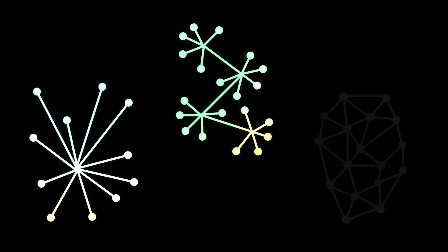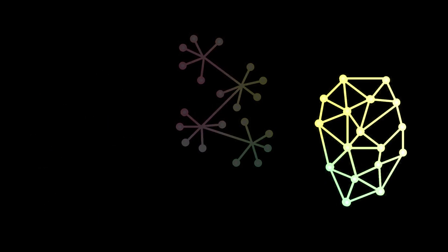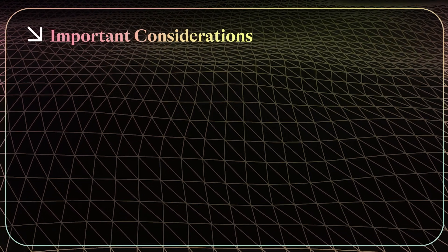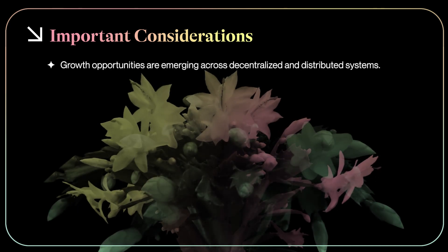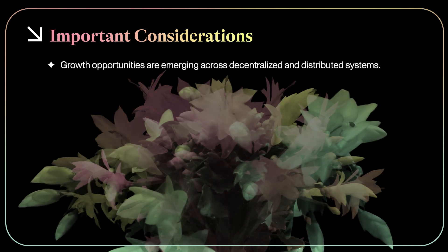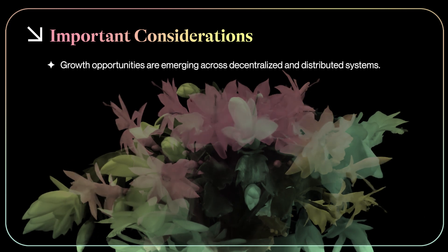Thank you very much for tuning in. This session is looking at the role of centralization versus decentralization versus distribution when it comes to network structures within the web3 discussion. The question really has to be asked: why decentralize when you can centralize? What are the pros and cons of the different ways data and systems are organized? Huge amounts of growth opportunities have emerged across the web3 space, specifically native to distributed or decentralized structures, and the majority of web3 development is very much linked to decentralized rather than centralized systems.